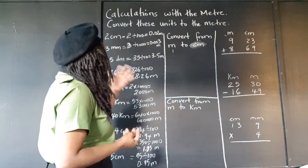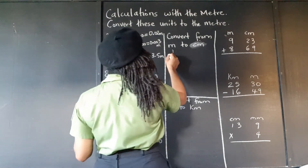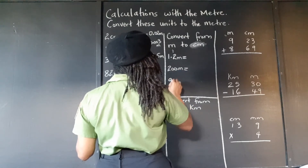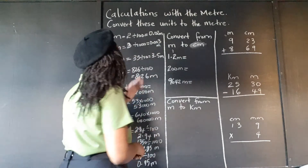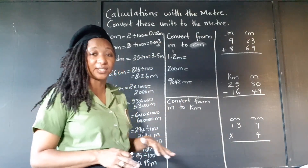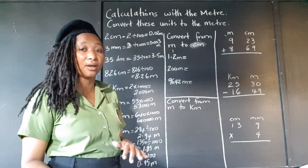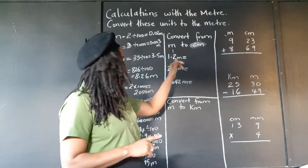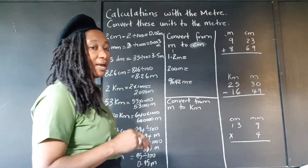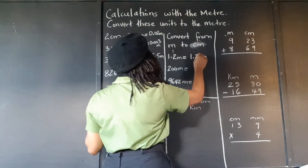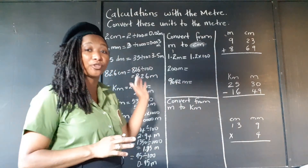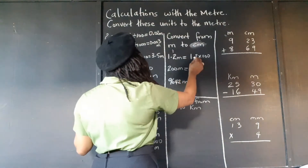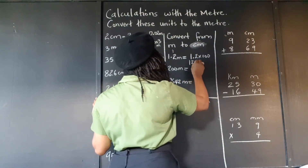Now we're converting other units — converting meters to centimeters. The meter is the bigger unit, centimeter is the smaller unit, so converting from bigger to smaller we multiply. Since there are 100 centimeters to make 1 meter, we multiply by 100. So 1.2 meters times 100: we move two places to the right from the decimal point, giving 120 centimeters.